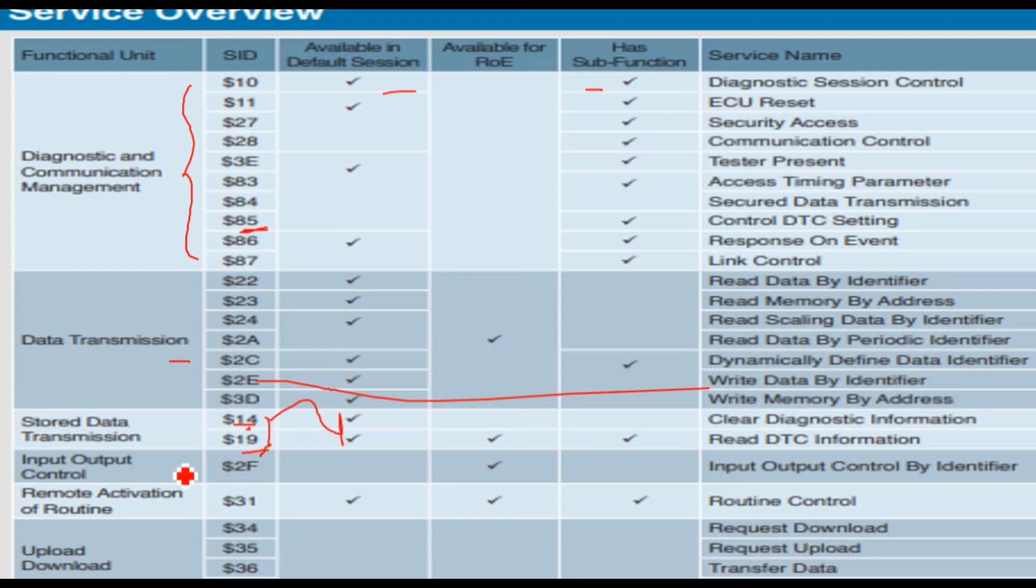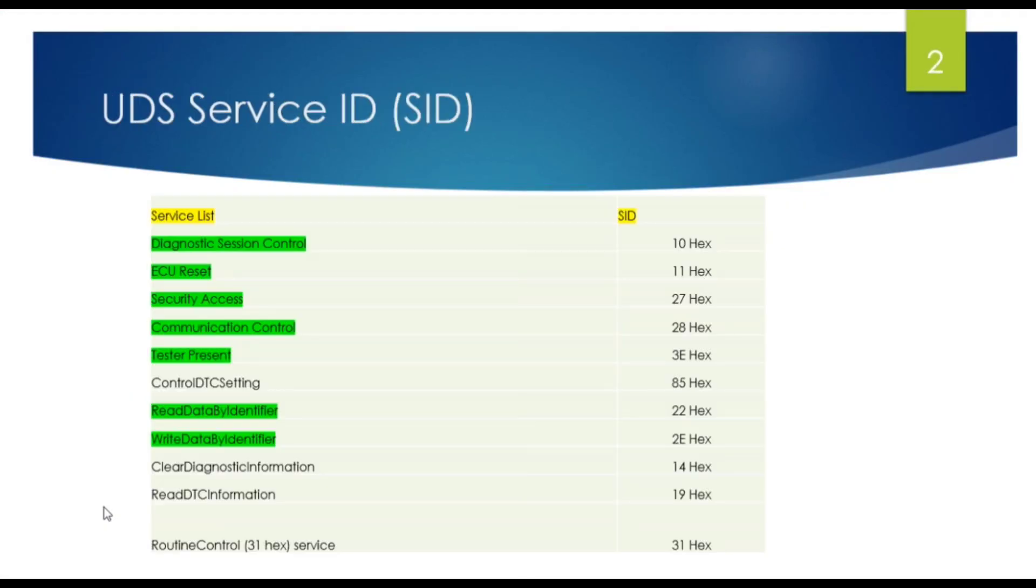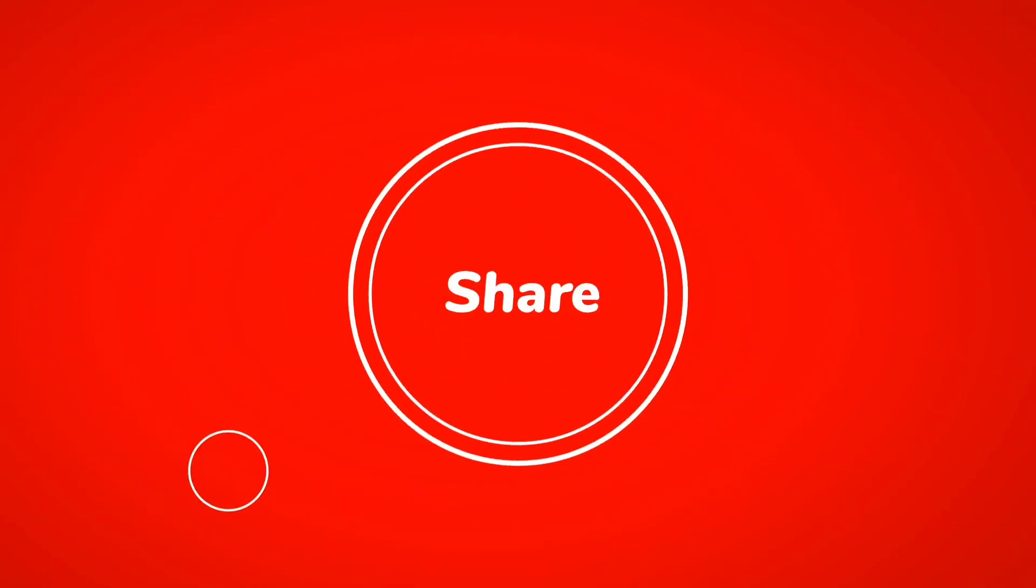That's it for DTC in this video. In the next video I will talk about the last one, which is Routine Control - service ID 0x31. We have covered Control DTC settings, Clear DTC, and Read DTC. If you have any doubts you can comment down your doubts and I will respond in the comment section.